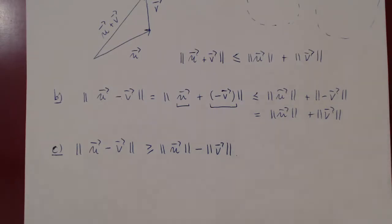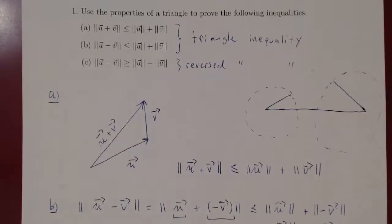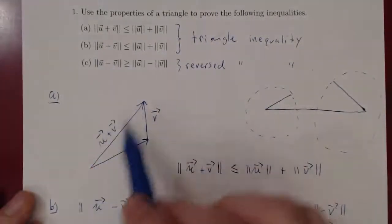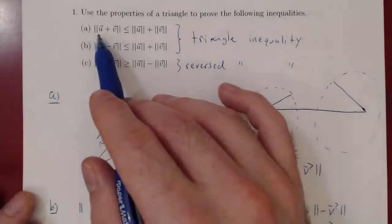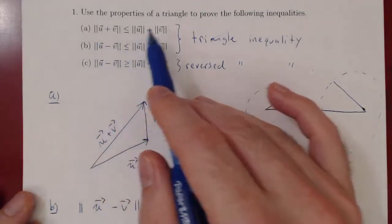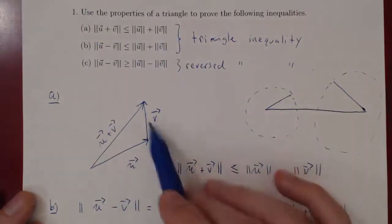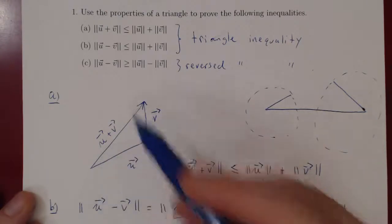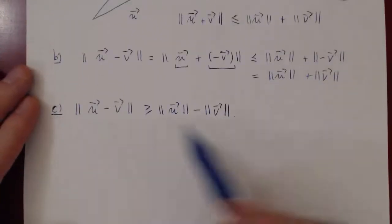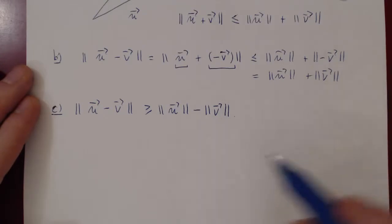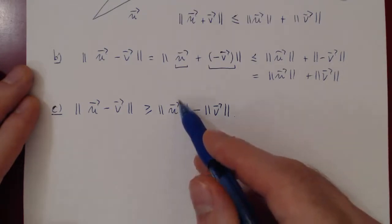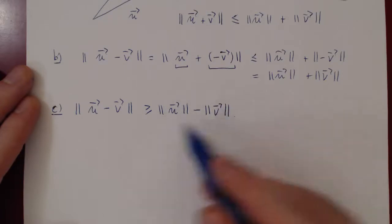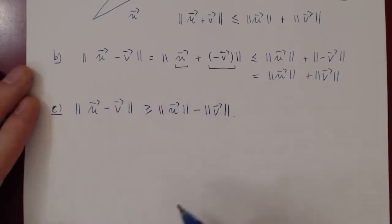And the idea here is to build a triangle with the vectors that are given to you. So here, naturally, we would build this triangle because the vectors that were given were u plus v, u and v. So with u and v, we built the third edge with u plus v. To prove the reversed triangle inequality, naturally, you want to build a triangle whose edges are given by the vectors u, v, and u minus v.